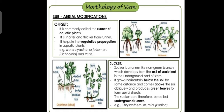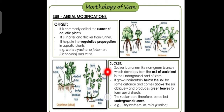The fourth category is suckers. A sucker is a runner-like, non-green branch which develops from the axil of scale leaves in the underground part of the stem. You can see in this structure: adventitious roots are present, three shoots are present together, and scaly leaves are present between them. The distance between all of these — the structures that grow between them — are the suckers.